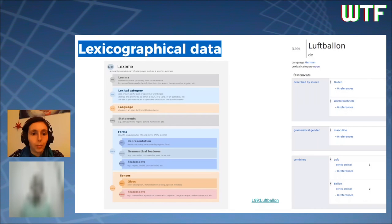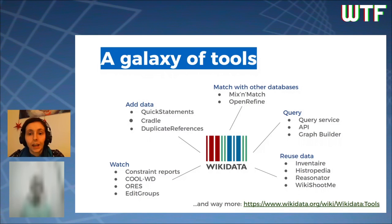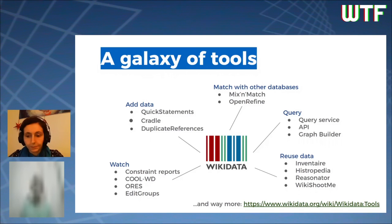If you want to know more, you can look at the lexicographical data section of Wikidata or ask in the Q&A. Wikidata comes with a bunch of tools — some developed by the Wikidata development team, some by the community — to do things more efficiently: adding data, matching data with other databases, querying the data, reusing the data, and watching data quality and recent edits. You can find the Wikidata tools page on Wikidata to discover plenty of these, and you can create your own.